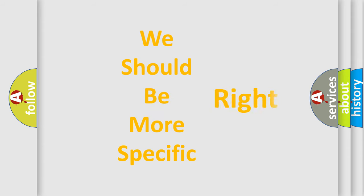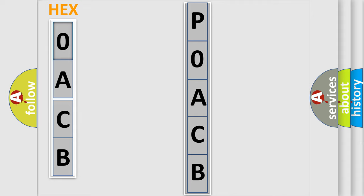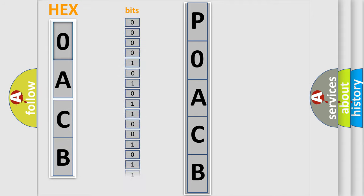The following demonstration will help you look into the world of software for car control units. The error code is split into two bytes consisting of 16 bits. One bit is the basic unit that each computer works with.